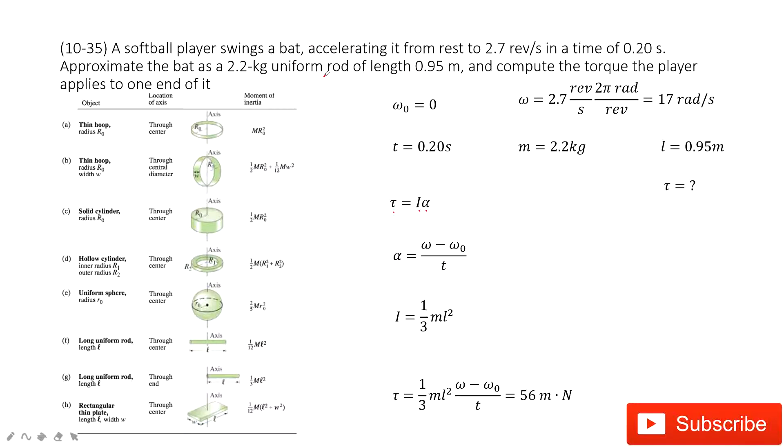From there, we look at the formula. It gives us I and alpha. Initially, the angular velocity is zero.